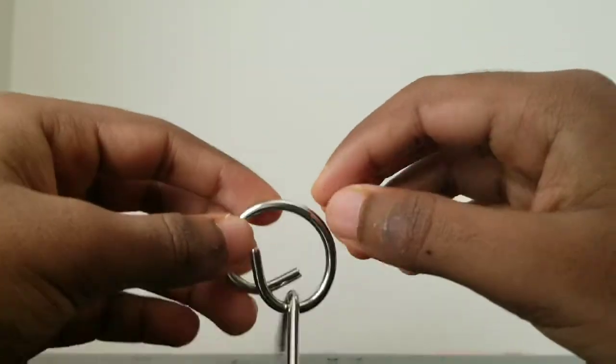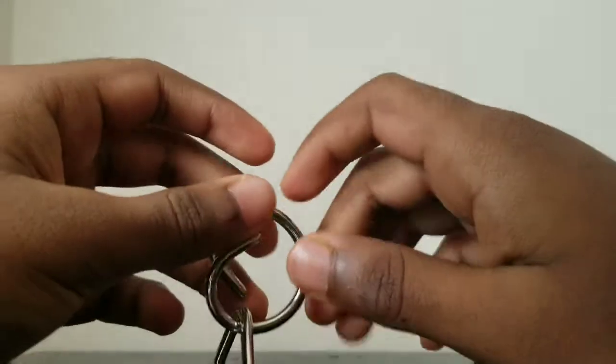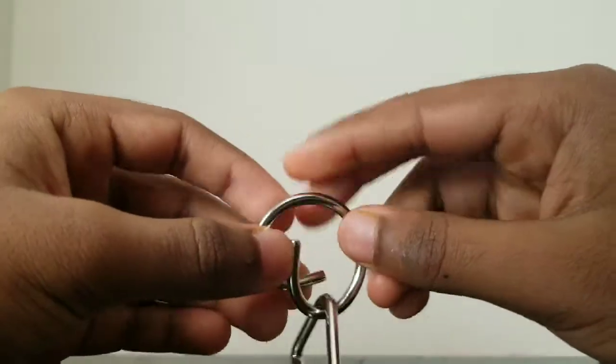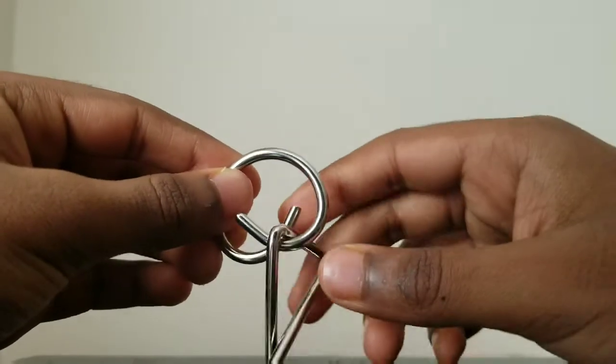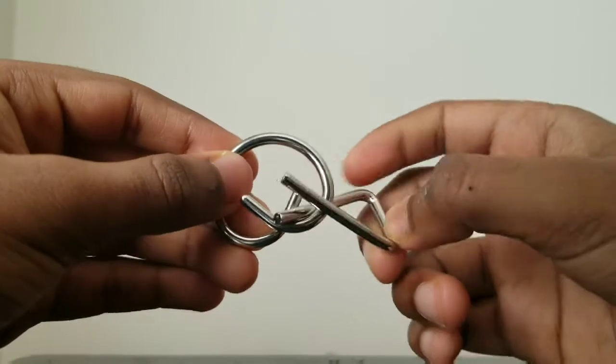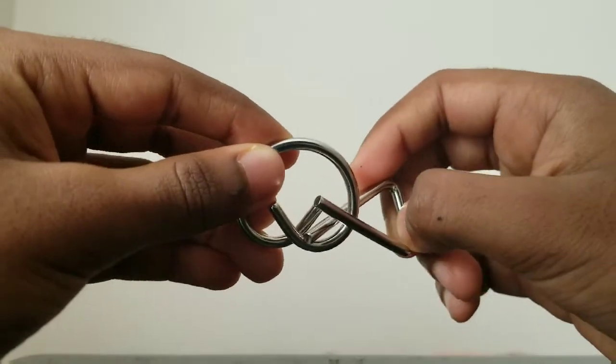Basically you want to hold the pretzel, turn it upside down like this. Then you want to get the triangle and hold it like this.